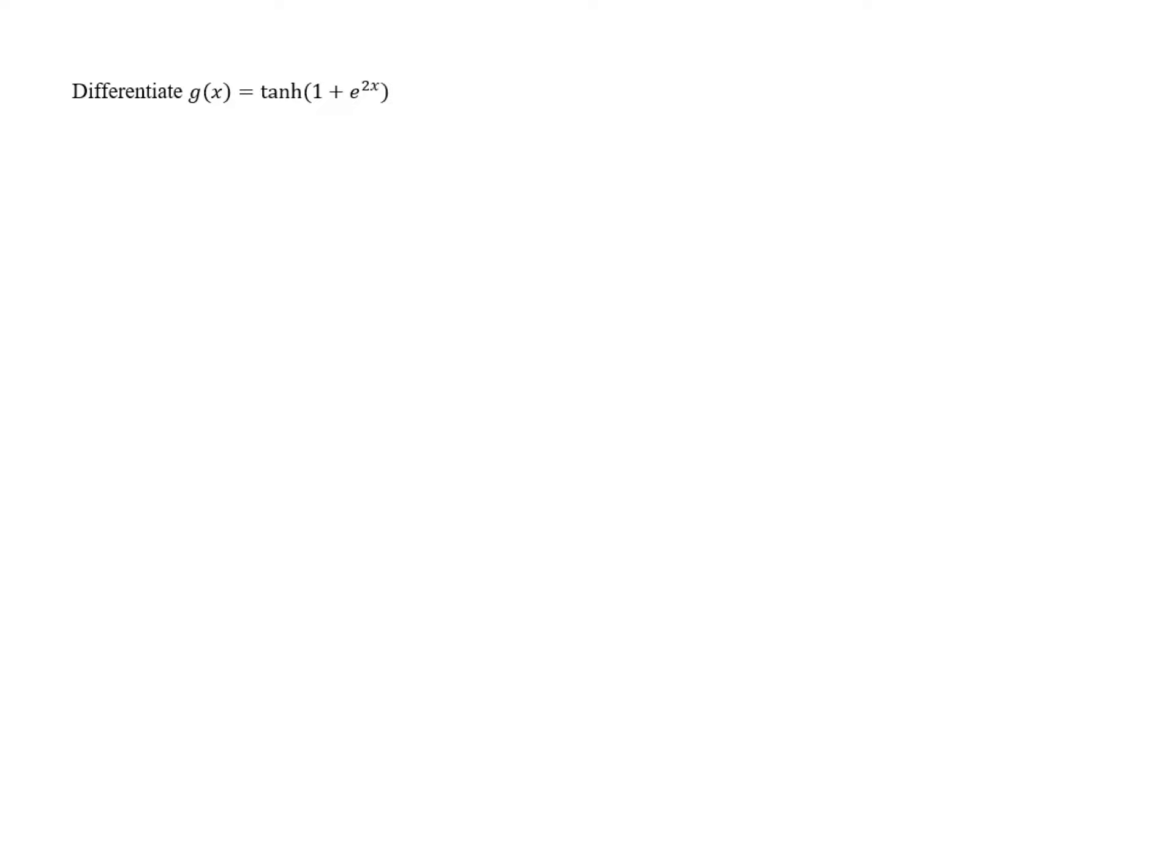Differentiate g of x equals hyperbolic tangent of the quantity 1 plus e to the 2x. We have another composition of functions, so we're going to have to use the chain rule to differentiate.